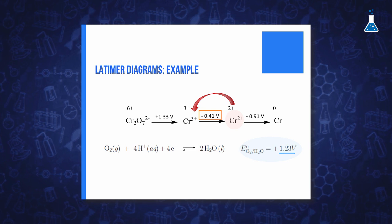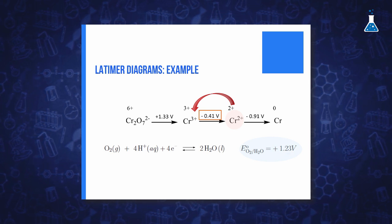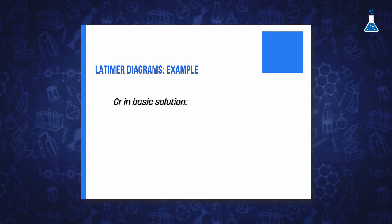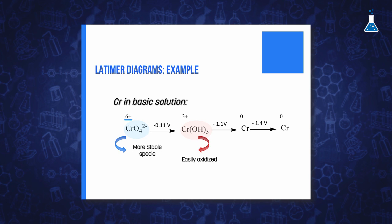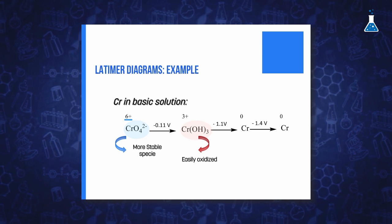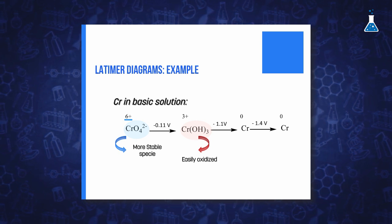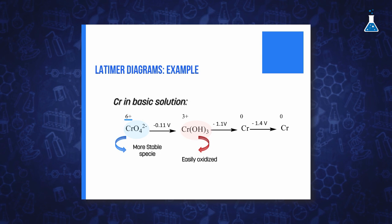However, if we examine the same diagram for chromium in alkaline solution, we observe that the 6+ state loses its oxidation power and is the most stable state of the element under basic conditions.